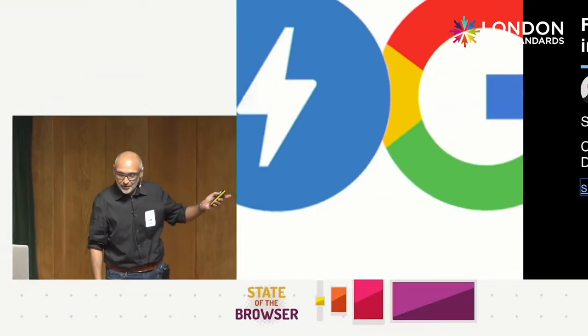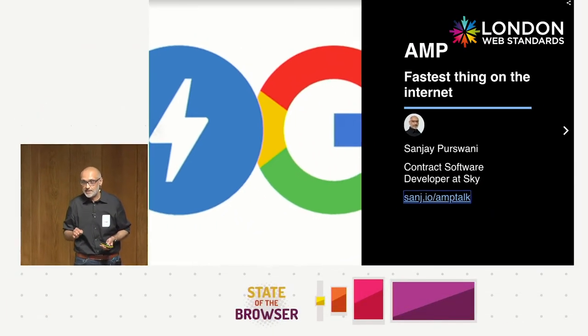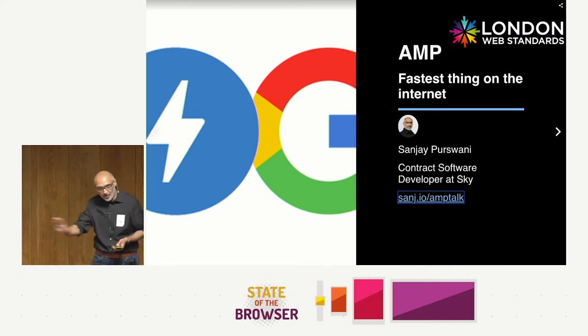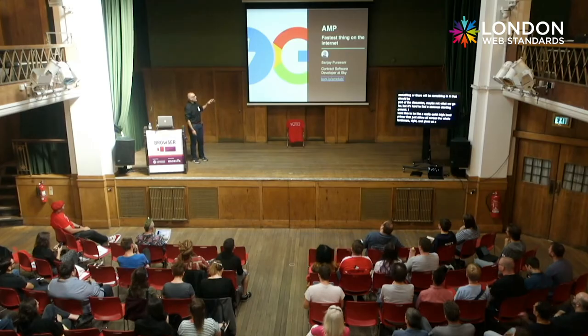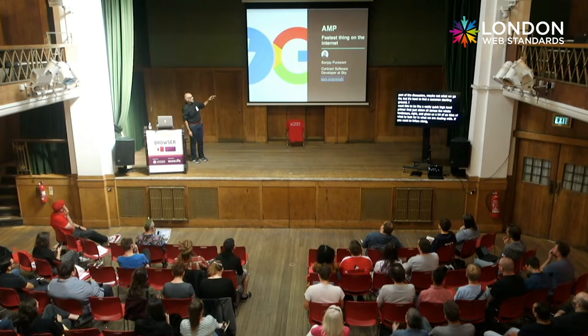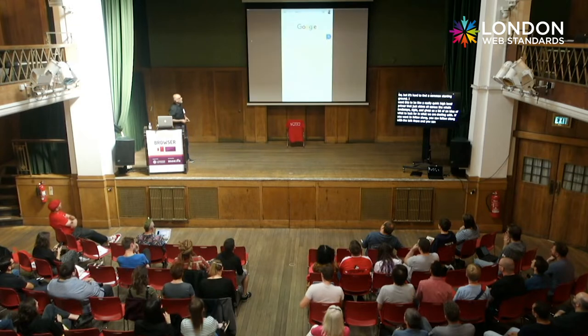What I've discovered working alongside people who don't know much about AMP is there are many situations in business where AMP could solve something or should at least be part of the discussion. So this is meant to be a really quick high-level primer that skims the whole landscape. You can follow along at sans.io/amp-talk — no need to take notes.